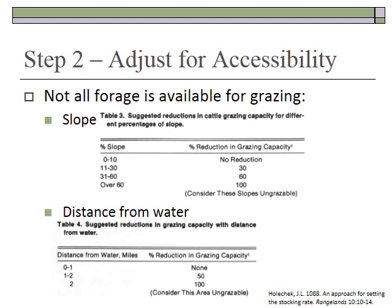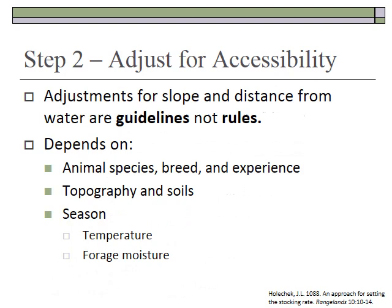Similar reductions apply for distance from water. Most cattle can access water within a mile from where they're grazing. From one to two miles, there is reduced use of that area, and beyond two miles, it is relatively unusable. These are general guidelines, not rules — there are more exceptions than rules in practice.